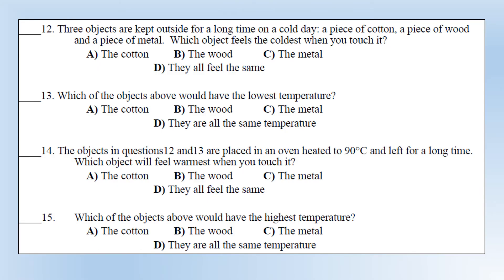Three objects are kept outside for a long time on a cold day: cotton, wood, and metal. Which object feels the coldest when you touch it? The answer is metal, because the thermal conductivity of metal is much higher - it's a much better conductor of heat and takes away heat from whatever you touch it with at a higher rate, which is why it feels cold. However, which object has the lowest temperature? They're all the same - left outside for a long time, they reach thermal equilibrium with the surroundings and will all be at the same temperature.